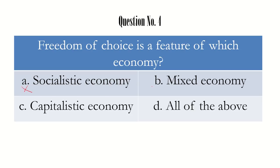In a mixed economy, both the government and private players share resources and carry out businesses, so there is no complete freedom of choice there either. Since two options are already eliminated, the remaining option is the capitalistic economy, and that is the right answer. It is capitalistic economy because private players are free to select the kind of goods and services they want to produce and supply. The answer is option C — capitalistic economy.